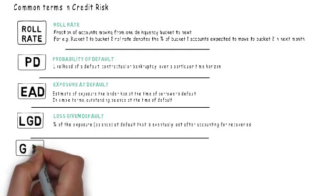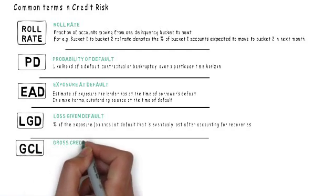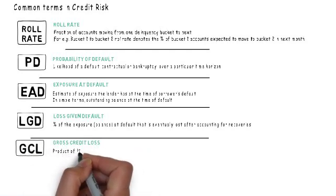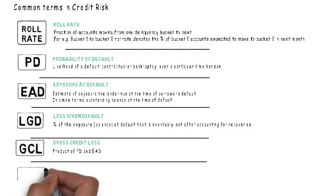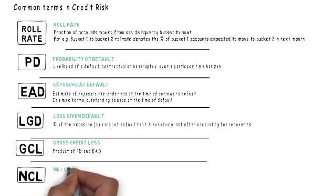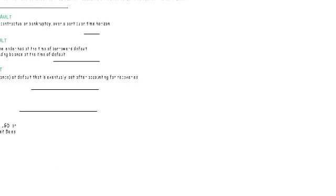GCL is the gross credit loss and it is expressed as the product of PD and EAD. NCL is net credit loss. It can be expressed as a product of PD, EAD and LGD, or it can also be represented as GCL minus recoveries minus asset sales.